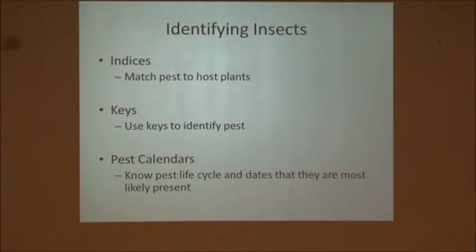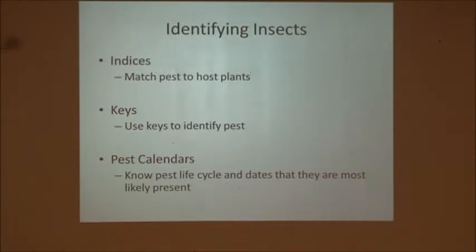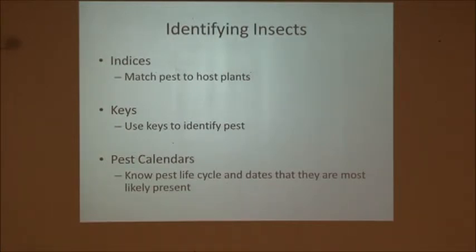Identifying insects — there are several different things that can help make it a little bit easier. Matching the pest to the host plant: not all insects feed on or are pests to all plants, so being able to correctly identify what plant you have and figuring out its common pests helps you narrow it down. Also use ID keys, pest calendars, and know the pest life cycle — knowing when Japanese beetles emerge, you can look at an indicator plant such as your roses and stay on the lookout for them.